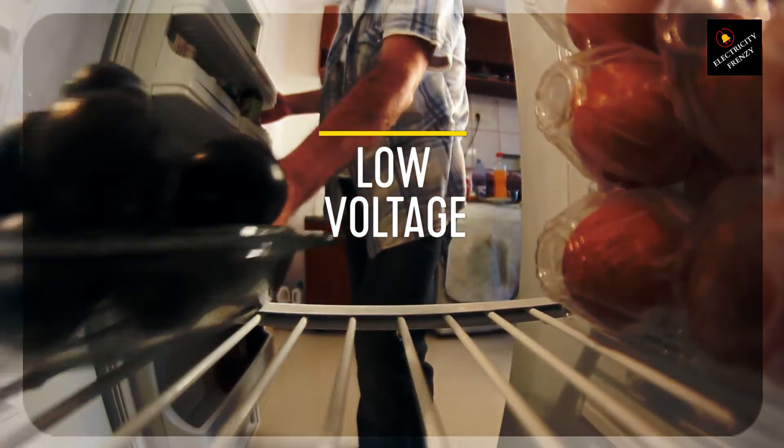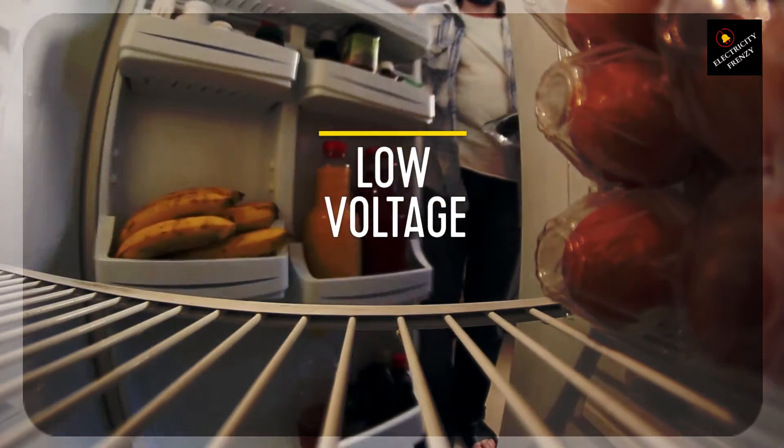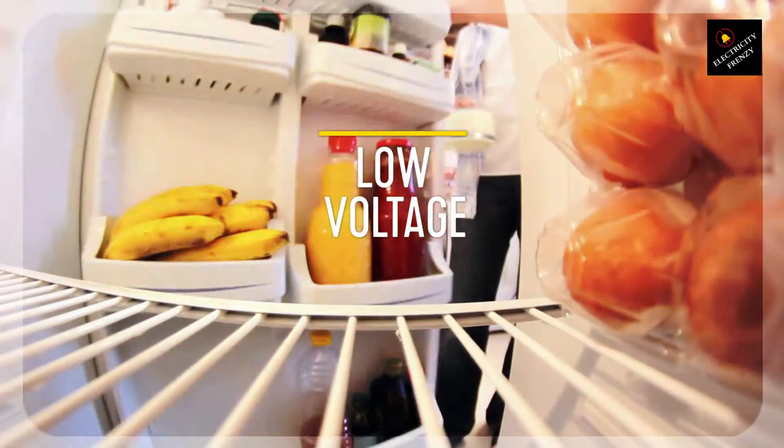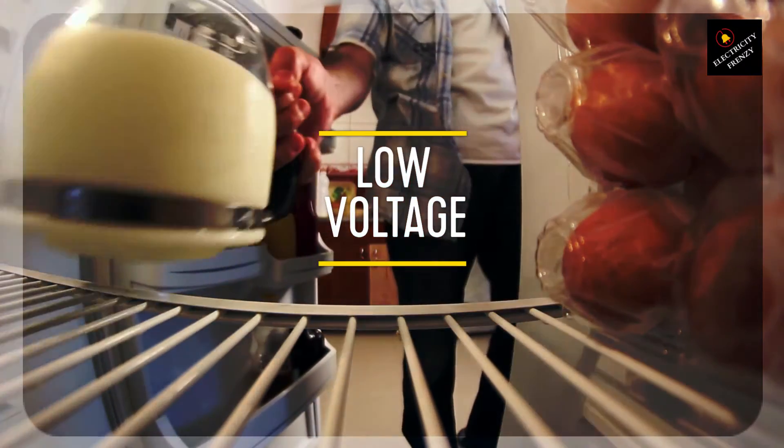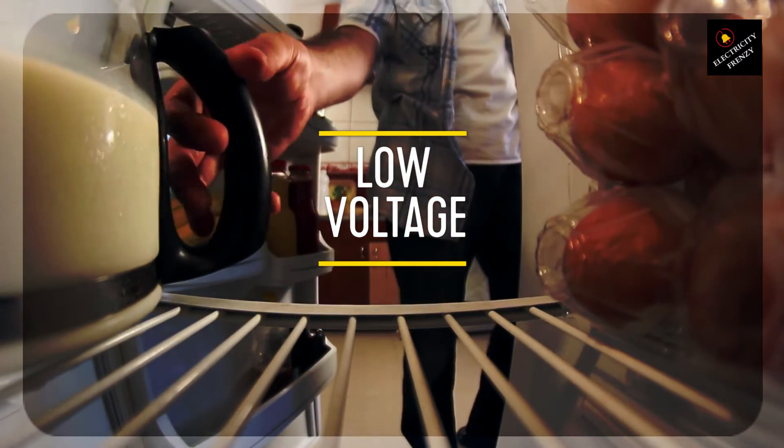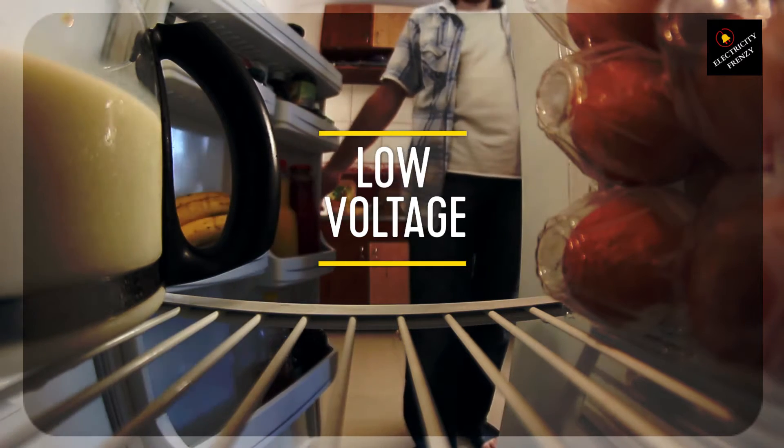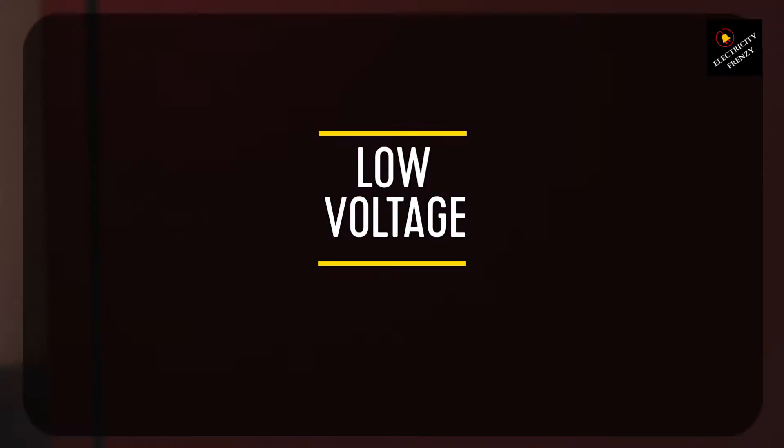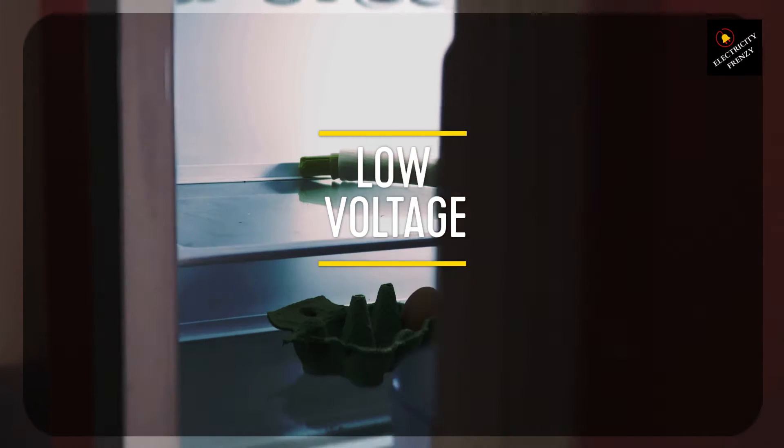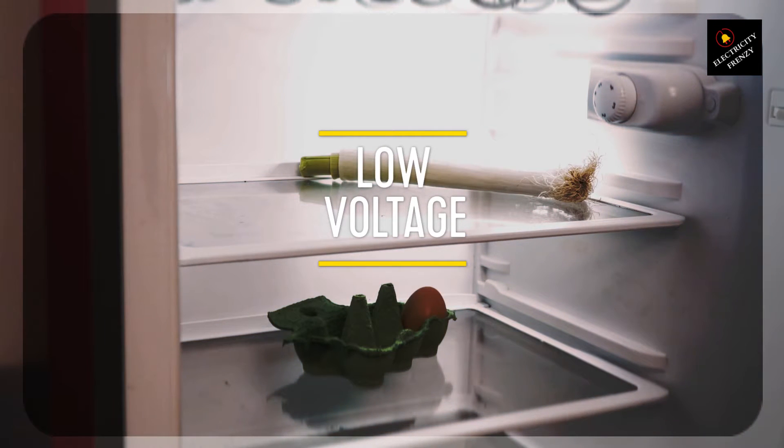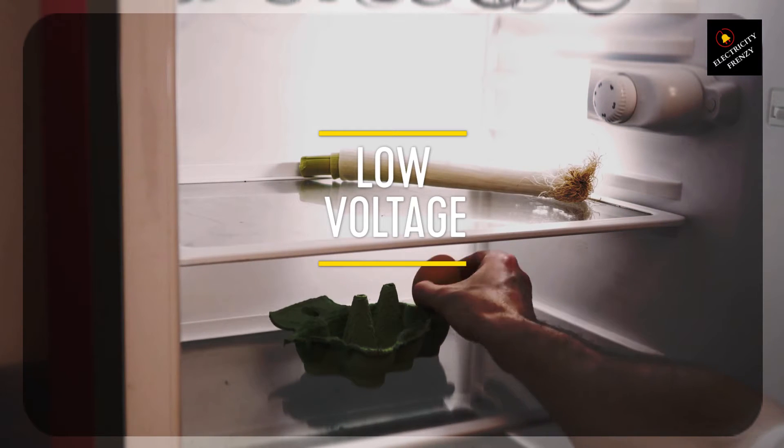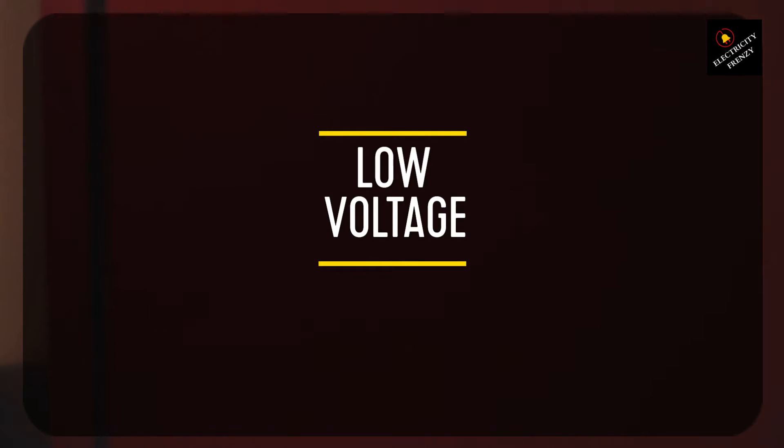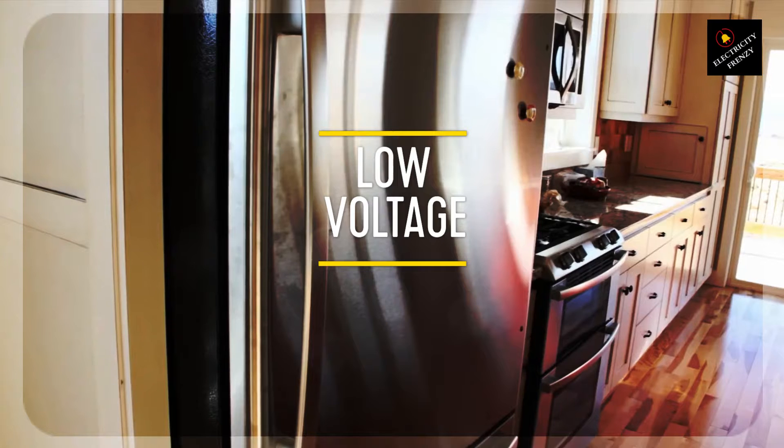Refrigerators. Our refrigerators rely on electric motors to power their compressors, which are crucial for keeping our food fresh. If the voltage is too low, the motor might not have enough power to run effectively. What to look out for. Your refrigerator may run longer than usual in an attempt to reach the desired temperature, but it might not cool adequately. This can lead to increased energy consumption, as the refrigerator tries to compensate for the low voltage by working overtime. It's also worth noting that the continuous strain on the refrigerator's motor and compressor can shorten the appliance's lifespan.